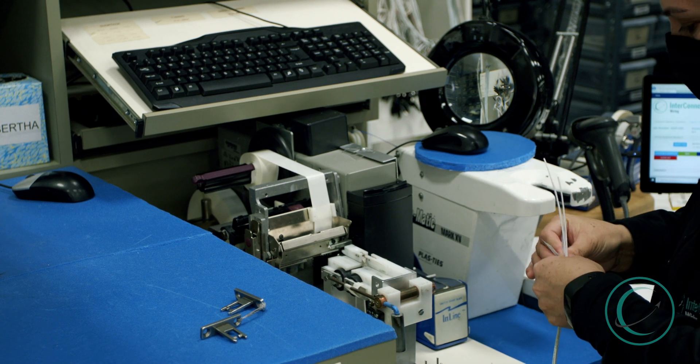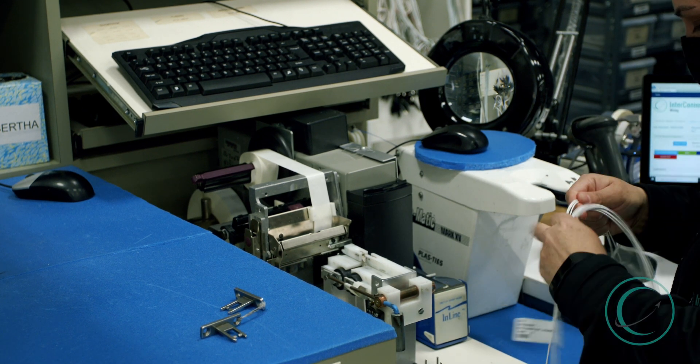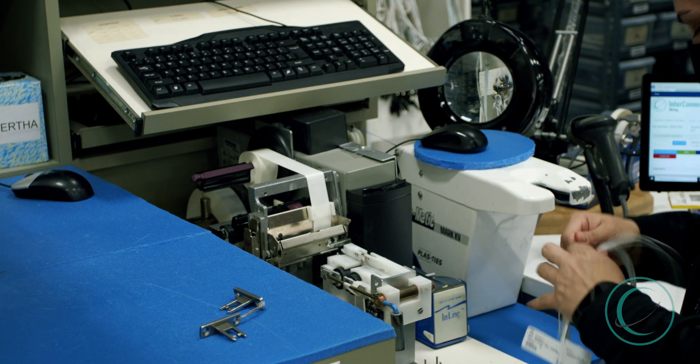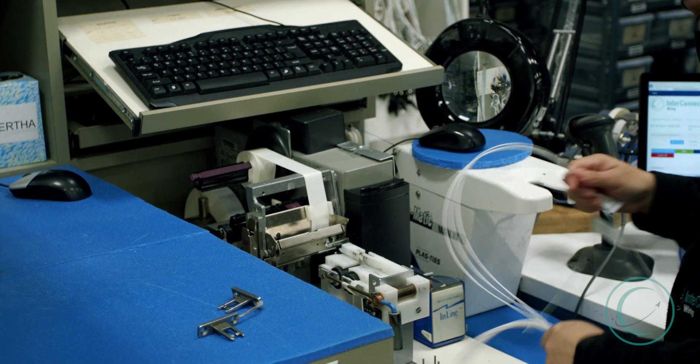The laser wire marking is complete, the wire then gets pulled out from the laser wire marking area and cut to a specific length. This is determined by what's called our routing list.